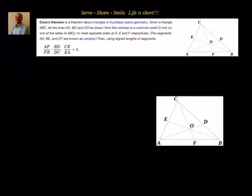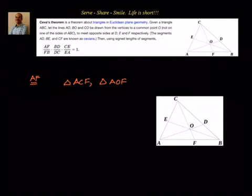Now, how to prove this theorem? Let's take the triangle given to us. First, we have AF/FB. Let's try to understand what triangles we can see with base as AF. With respect to AF as base, I can see two triangles: triangle ACF and triangle AOF. And similarly, with respect to base FB, I see two triangles: triangle BCF and triangle BOF.